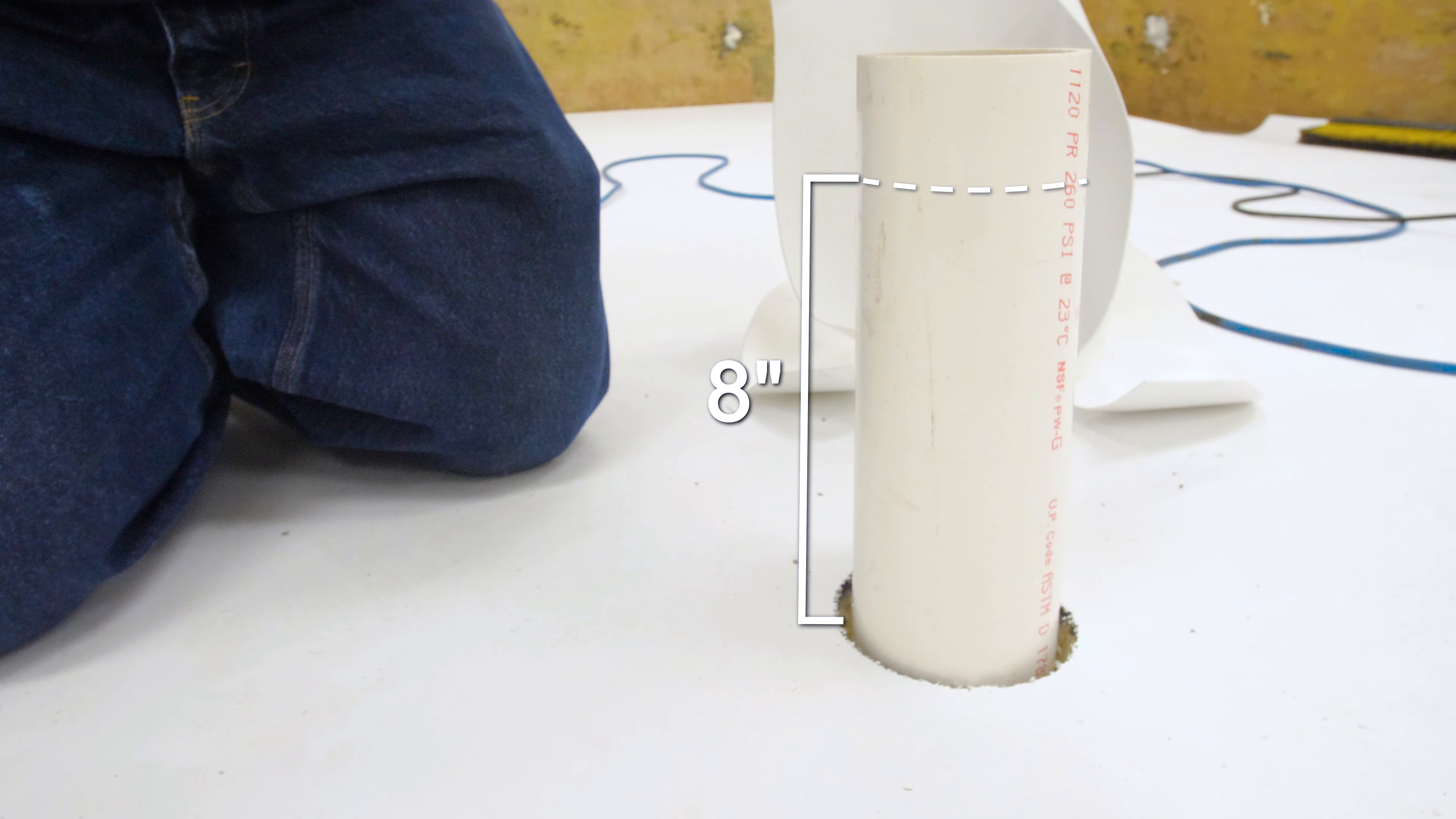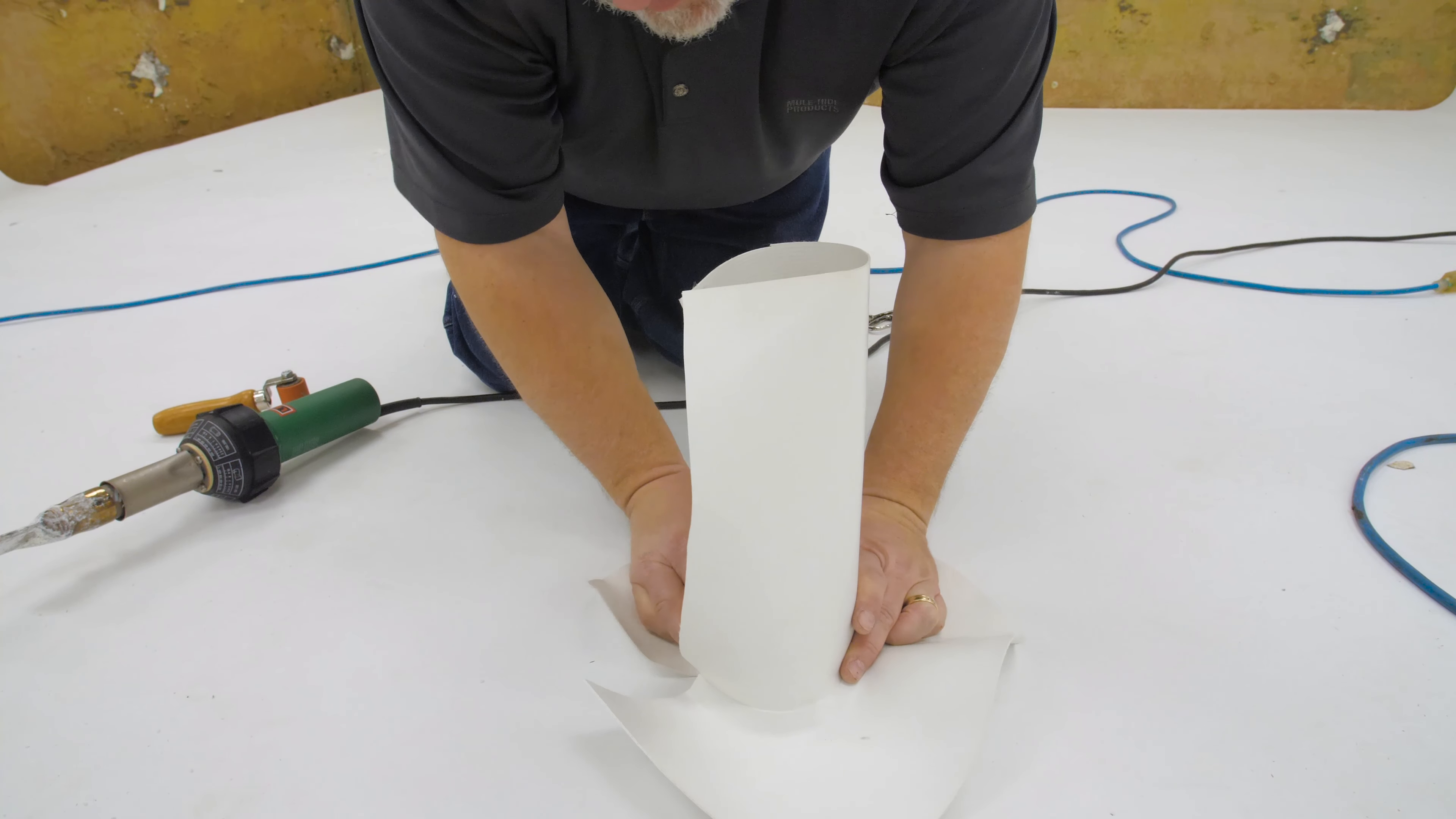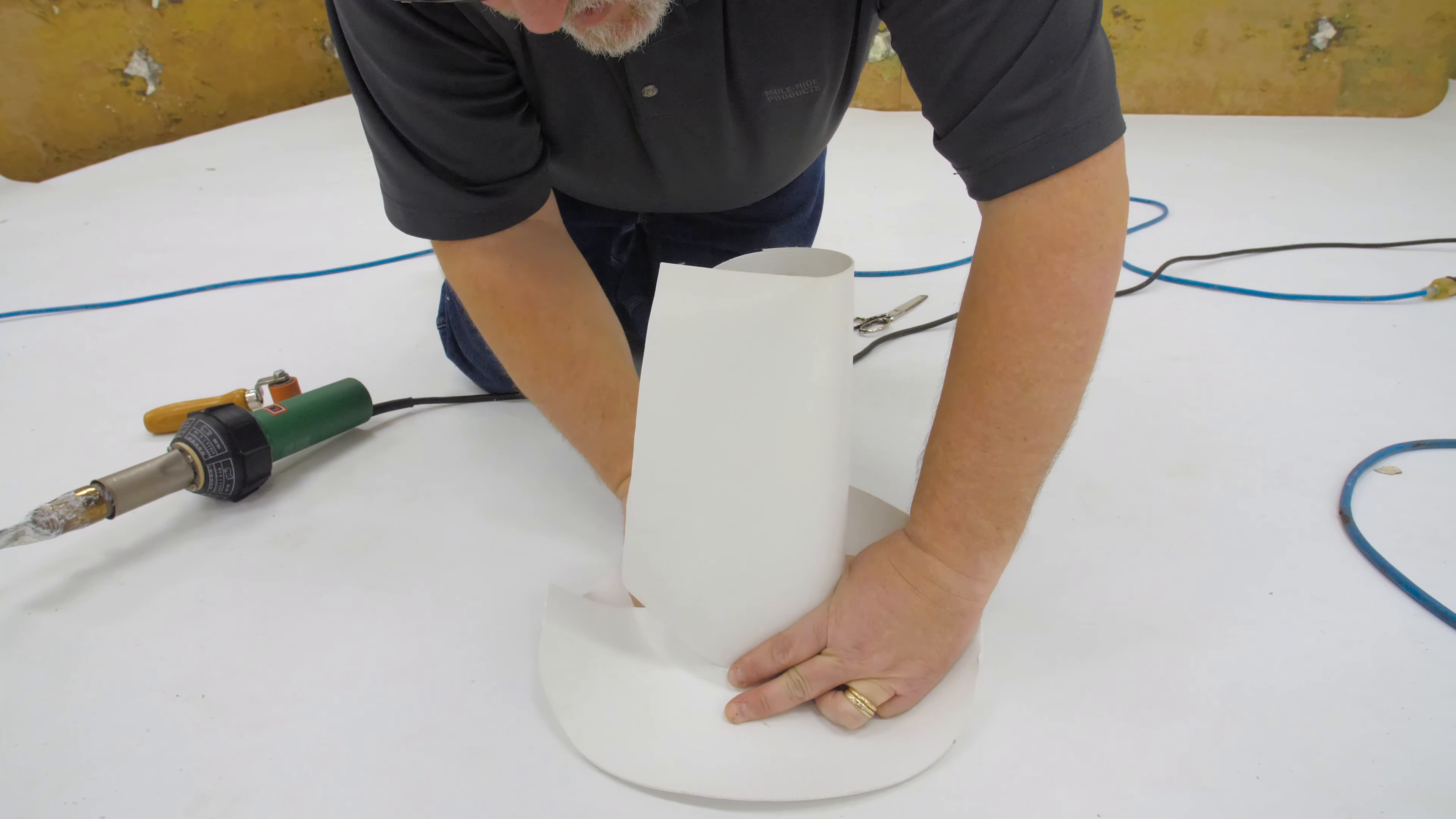Mulehide requires a minimum 8 inch flashing height on the pipe. Wrap the split pipe boot around the pipe until the vertical seam is tight to the outside face of the pipe.